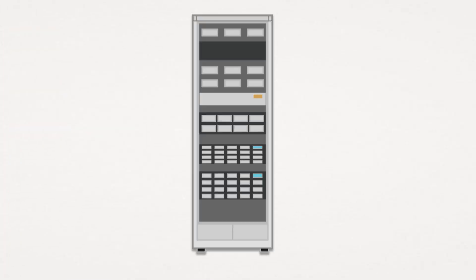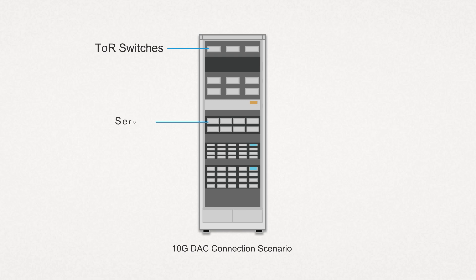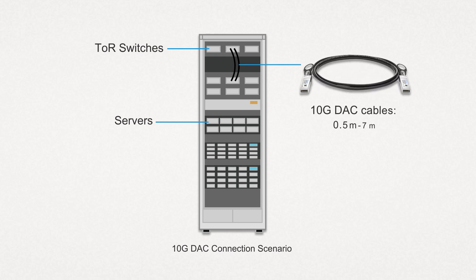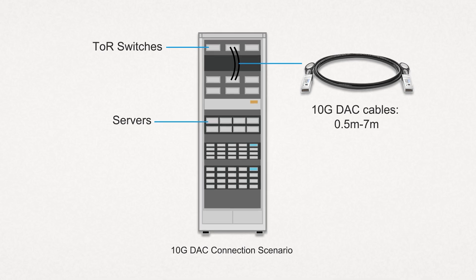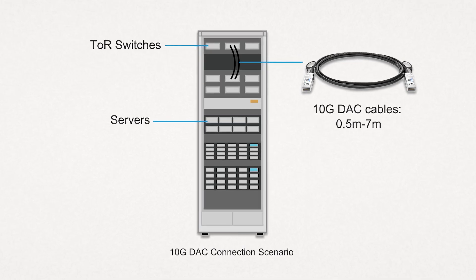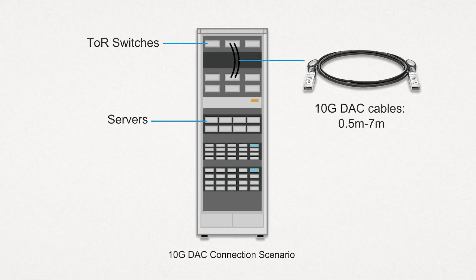For example, in top-of-rack TOR wiring design, TOR switches and servers are usually placed in the same cabinet with at least one switch per rack. Servers in the rack are typically connected to the switch via copper cables. Therefore, DAC cables are very suitable for the connection between servers and TOR switches, as they do not require longer distance products.